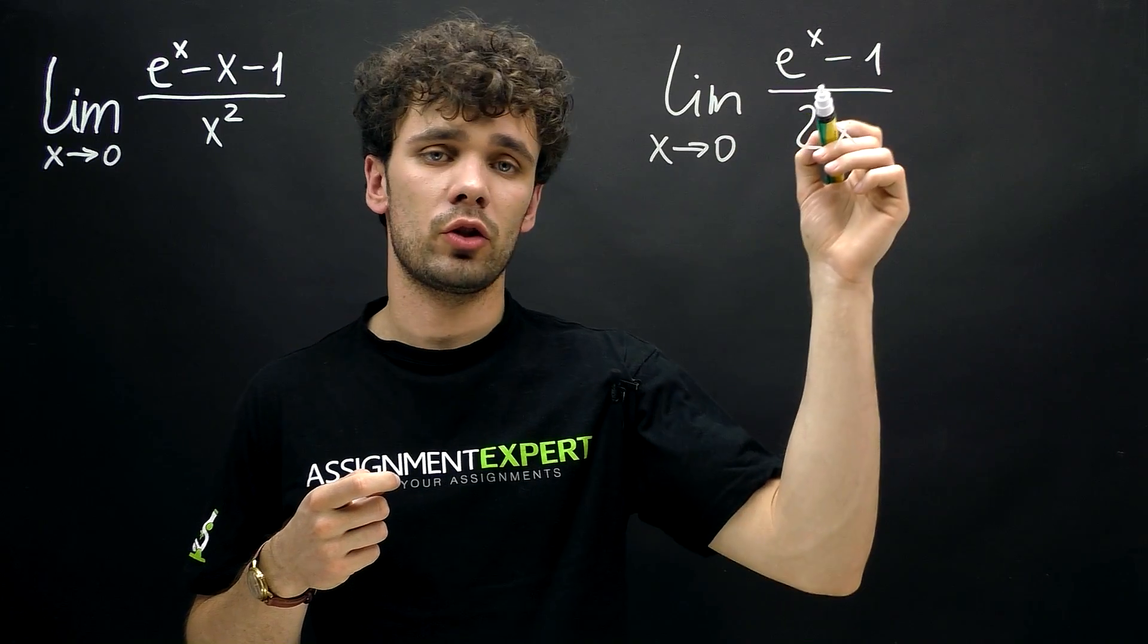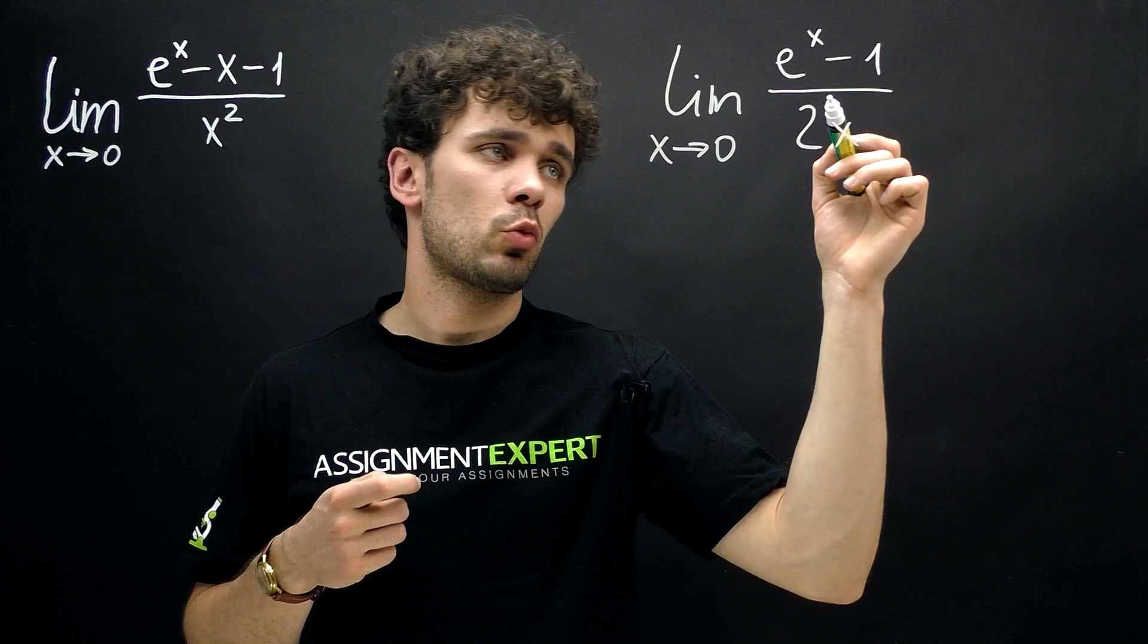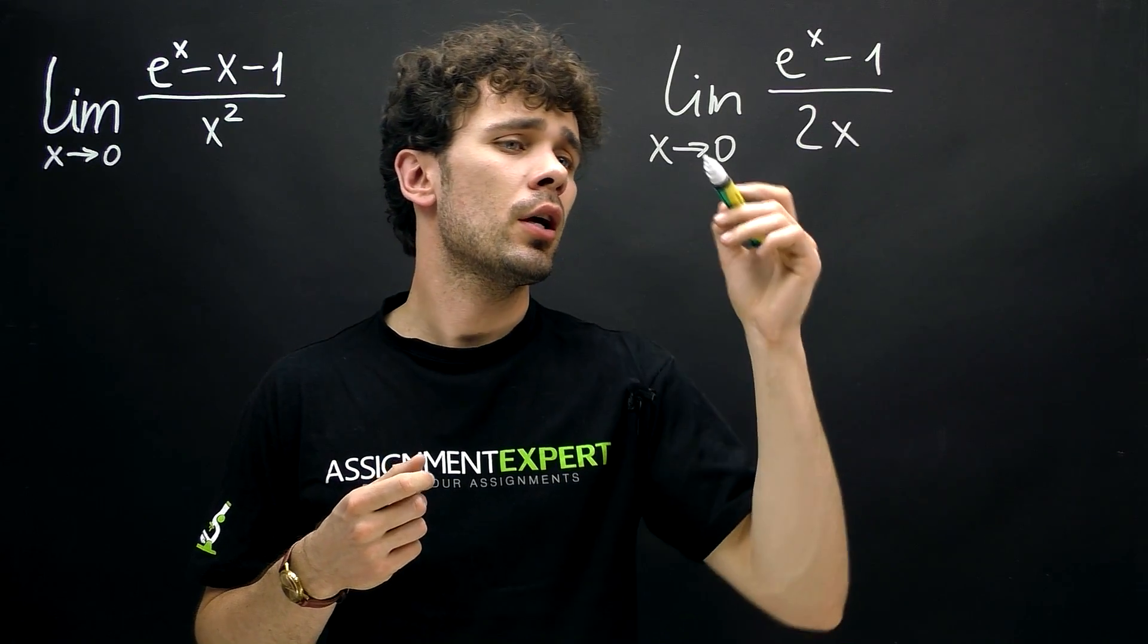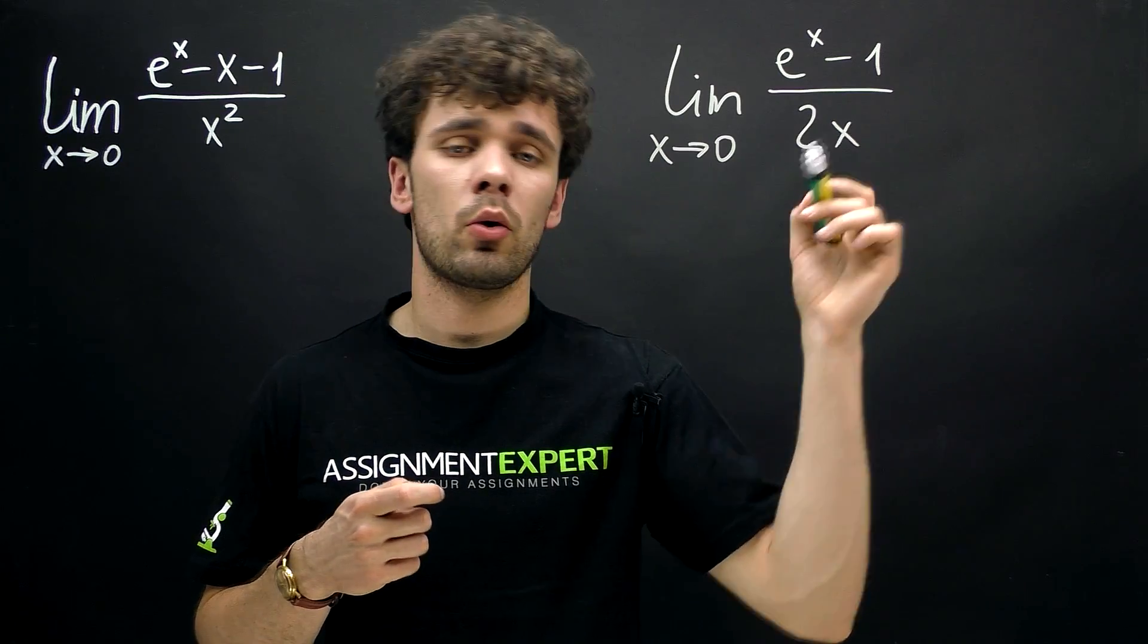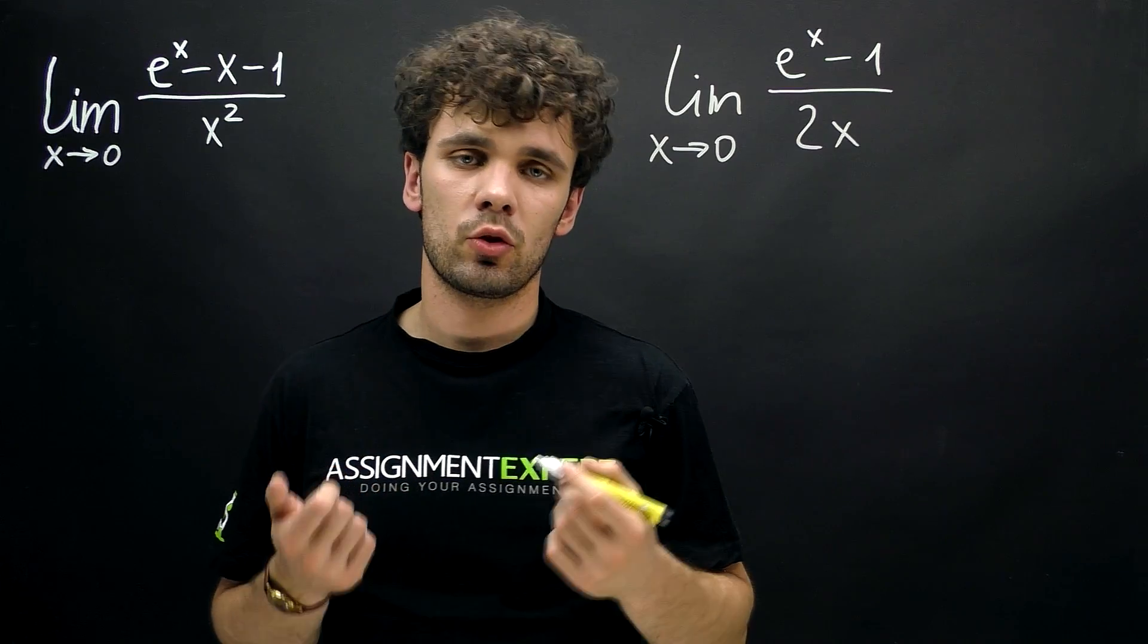So now let's put zero into this limit. We will get e raised to the zeros, which is 1 minus 1. So again we have zero in the numerator and x tends to zero gives us zero in the denominator. So here we need to apply L'Hospital's rule again.